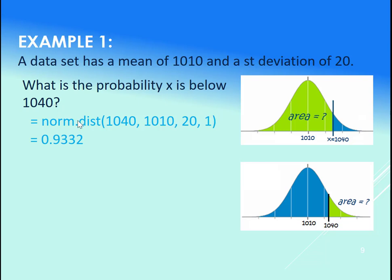So we use our norm.dist, and we put in the x value, and then we put in the mean, and then we put in the standard deviation, and then a one. One means cumulative—it means get the actual probability at that value or below it.